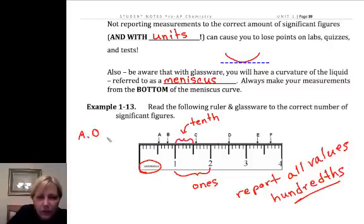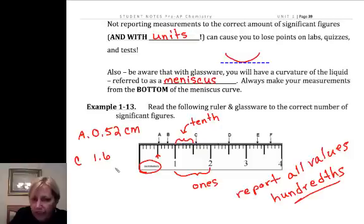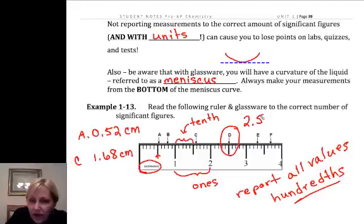A is below one, so A is going to be 0.52 cm. You might have estimated it as three. Let's do C. C is above the one so I know the one for sure. I know it's above 0.6 and below 0.7, and I'm going to call that 1.68 centimeters. D, I know it's above two and below three. I see it as a five, and since for my eye it looks like it's right on the line, I'm going to put a zero there - 2.50 - because I have to report to the hundredths place.